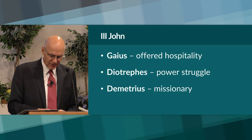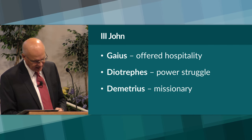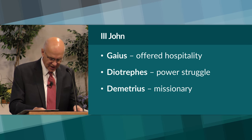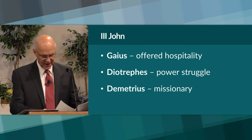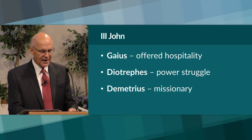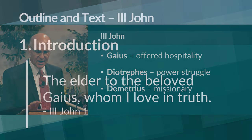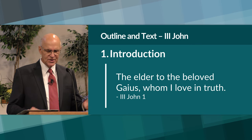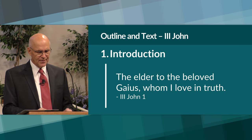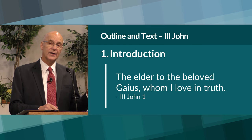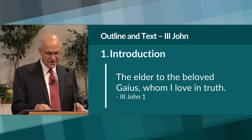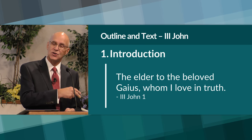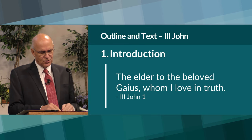With this in mind, here is a possible outline for Third John. This outline will help us see the flow of the thinking as we review the letter line by line. The first part is the introduction, where John says 'the elder to the beloved Gaius whom I love in truth.' John doesn't name himself because the recipient knows him and is aware of his position and role in the church.